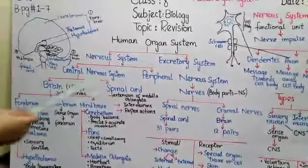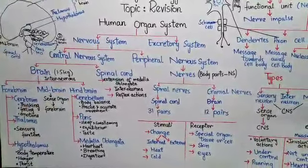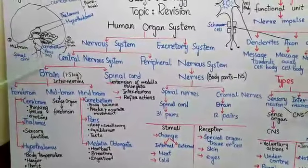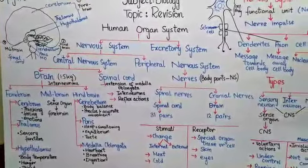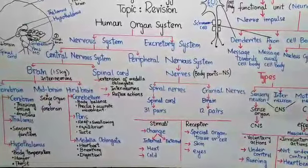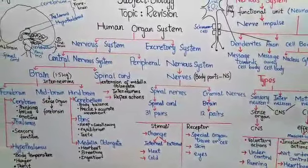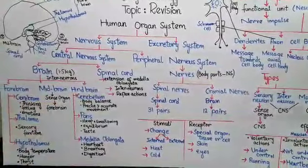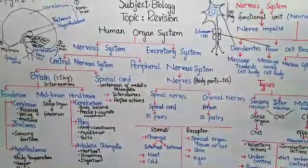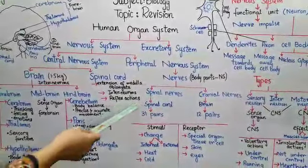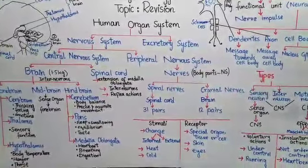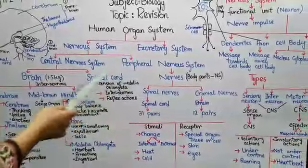The next portion of the central nervous system is the spinal cord. The spinal cord is actually an extension of the medulla oblongata. It runs through your vertebral column, which protects it. The spinal cord also consists of inter-neurons. It controls your reflex actions, which are immediate or involuntary actions performed without conscious thought.